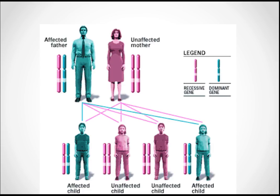Here is a diagram to help you remember. The affected father, the unaffected mother — the pink one is a recessive gene and the blue or green one is a dominant gene. You can see the affected child has a single dominant gene, that's why they developed the disease. Whoever has a single dominant gene has developed the disease; those who don't have it did not develop the disease.